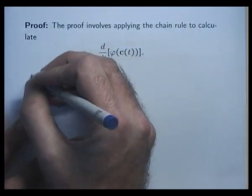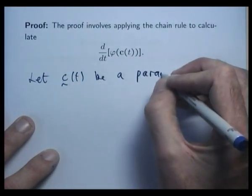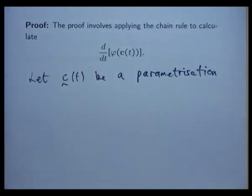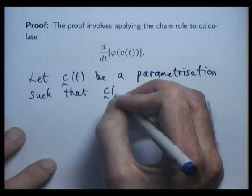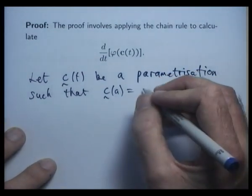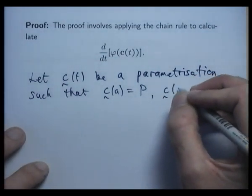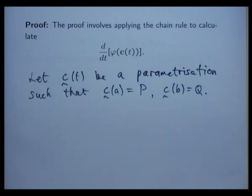All right. So suppose we parameterize our curve curly C by a vector function. It's regular and smooth enough. Now, c of a is going to represent the point P, the initial point. c of b is going to represent the terminal point Q. So the vector function c of t parameterizes the curve C for t between a and b.